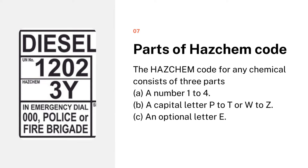Let us discuss the parts of HAZCHEM code and how to read it. The HAZCHEM code for a chemical consists of three parts: first, a number from one to four; second, a capital letter from P to T or W to Z; and third, an optional letter E. For example, the HAZCHEM code '3Y' has the number 3 and the letter Y; since E is optional, its absence is not a concern.